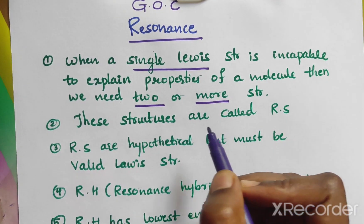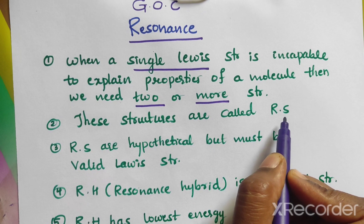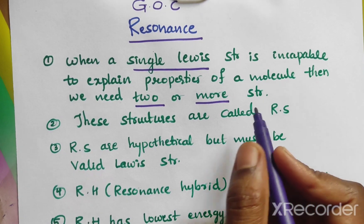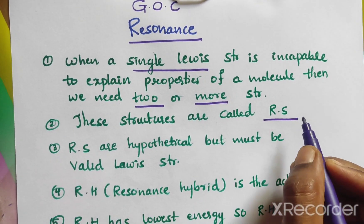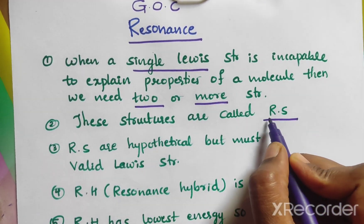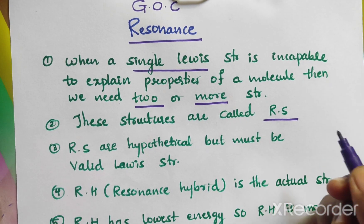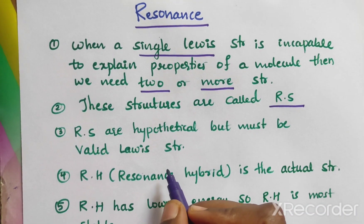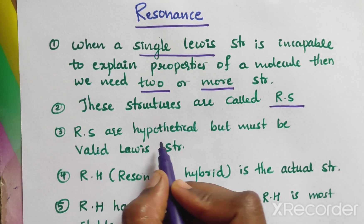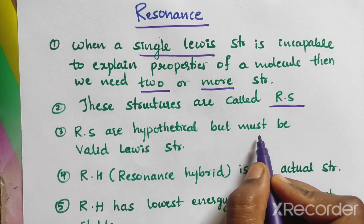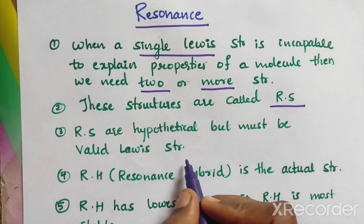These structures are called resonance structures. These structures are hypothetical, but must be valid Lewis structures.